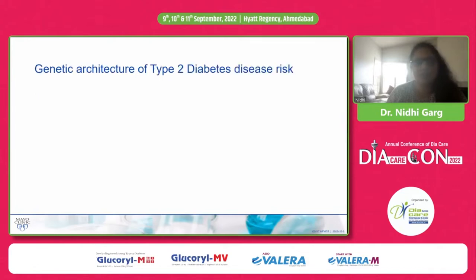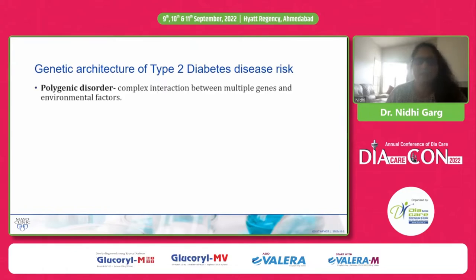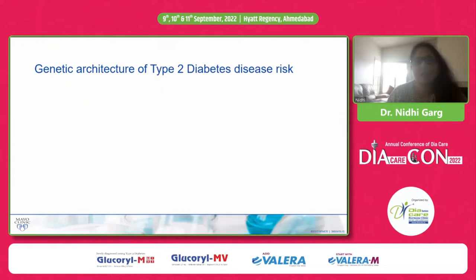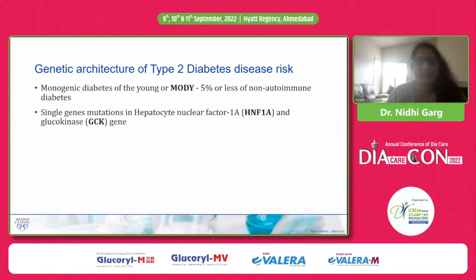Focusing on the main topic — the genetic architecture of type 2 diabetes. Type 2 diabetes is a polygenic disorder with complex interaction between multiple genes and the environment. Unlike type 1 diabetes, where the entire genetic risk is concentrated in the HLA region, in type 2 diabetes multiple genes are scattered across the genome. Monogenic diabetes of the young, or MODY, constitutes less than five percent of non-autoimmune diabetes and is due to single gene mutations in hepatocyte nuclear factor 1A and glucokinase.